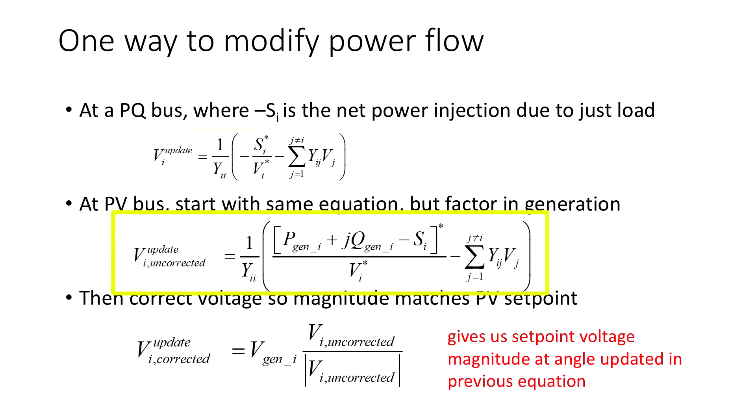At a generator PV bus, the current injection now needs to take into account the generator current injection. The generator real power is taken from the known power dispatch, while the generator reactive power is computed using the equation on the previous slide. The voltage update then needs to be corrected so as to have an updated magnitude which is equal to the generation voltage set point. So we need to add the voltage correction step shown, where we reset the voltage magnitude but leave the angle unchanged.